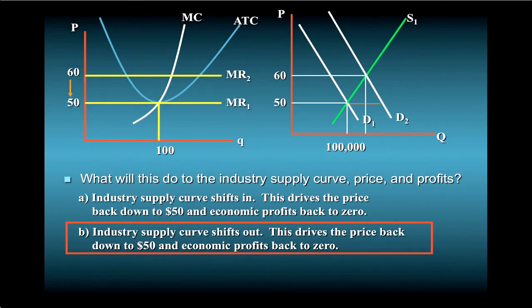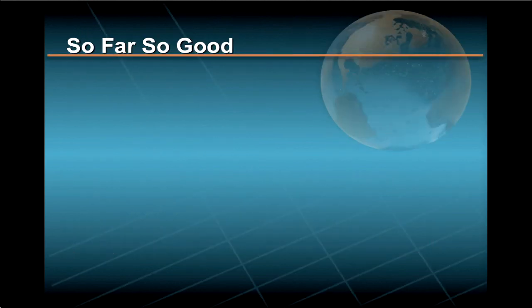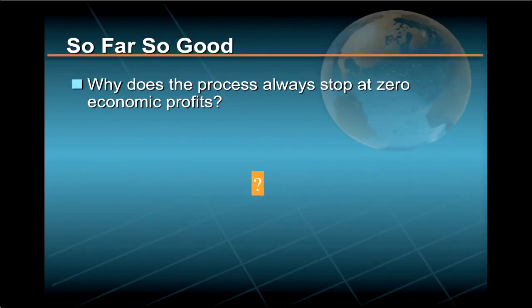The correct answer is B. Entry by new firms shifts the supply curve out and returns the industry to long-run equilibrium. This drives the price back down to $50 and economic profits back to zero. But why does the process always stop at zero economic profits?